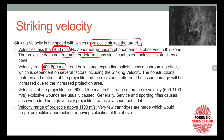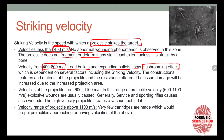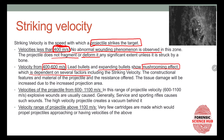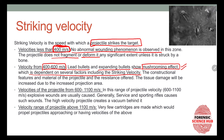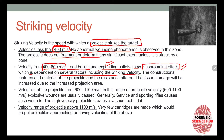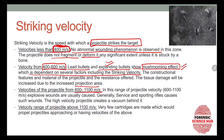In the 400 to 600 meters per second range, lead bullets and expanding bullets show a mushrooming effect — they open up in a mushroom shape. This depends on several factors including striking velocity, the constitutional features and material of the projectile, and the resistance offered. Tissue damage is increased due to the increased projection area as the bullet expands.